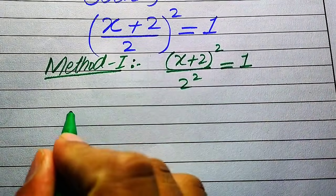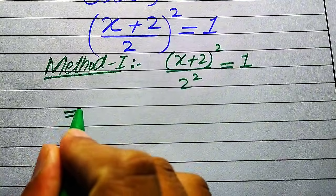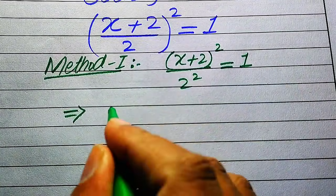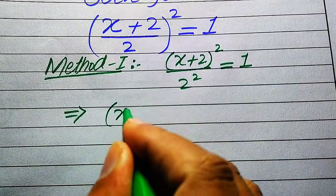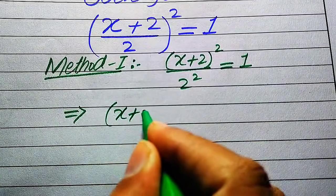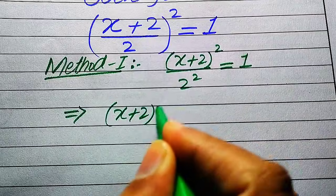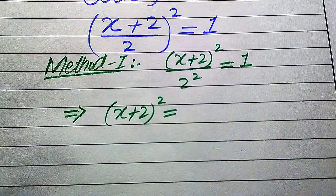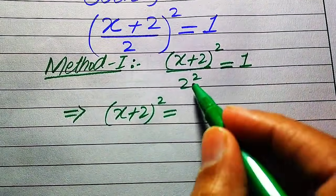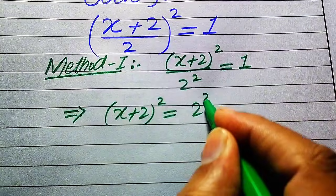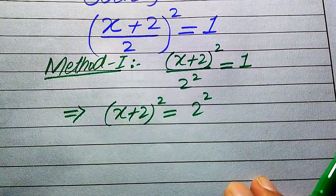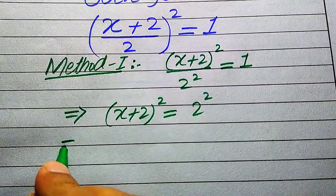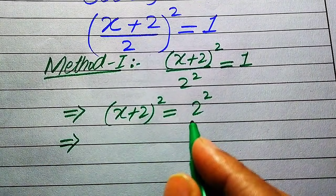Now we move 2² from the left hand side to the right hand side, and it will be written as (x + 2)² equals 2² multiplied by 1, which becomes 2².